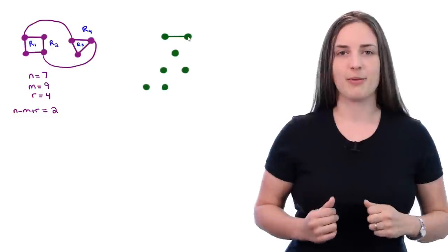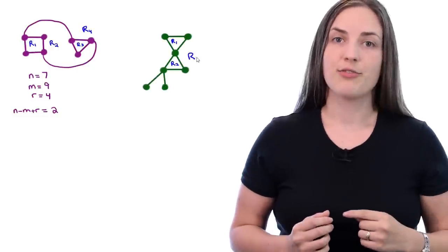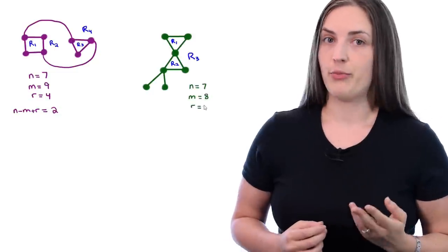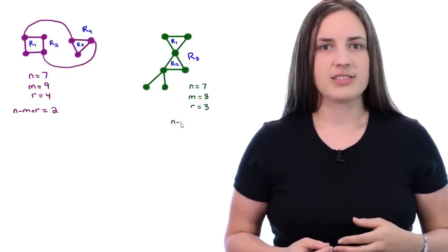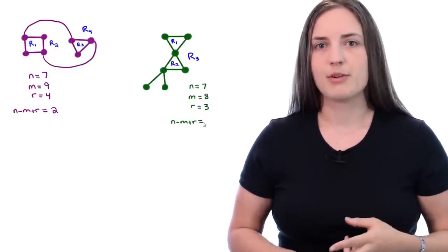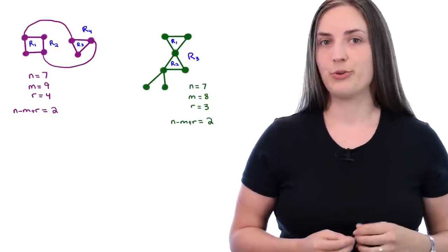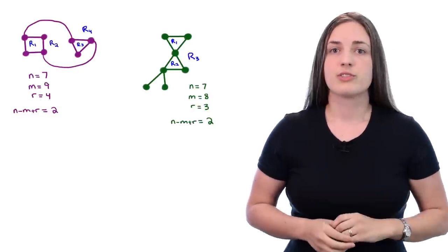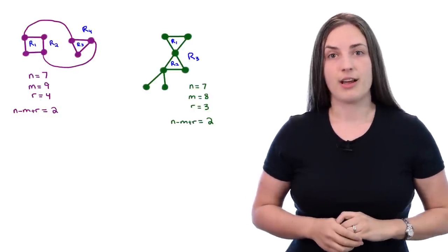Let's try another example. This green plane graph has seven vertices, eight edges, and three regions, and again we notice that N minus M plus R equals two. This is not just a coincidence. It actually holds for every connected plane graph.